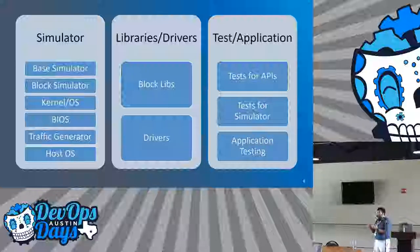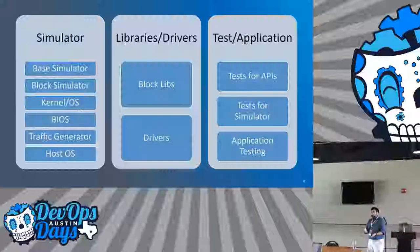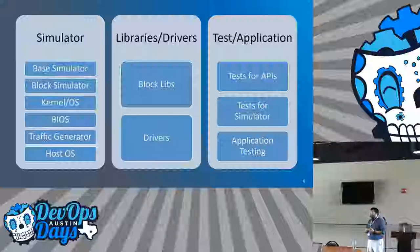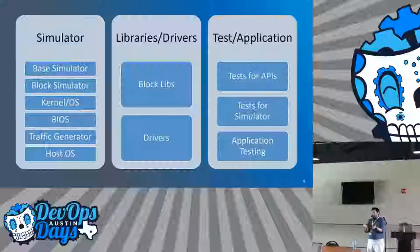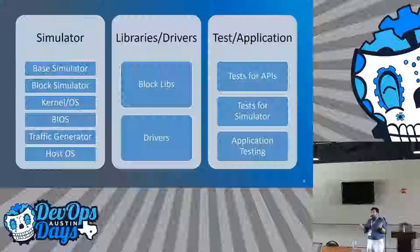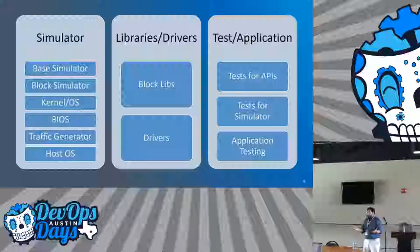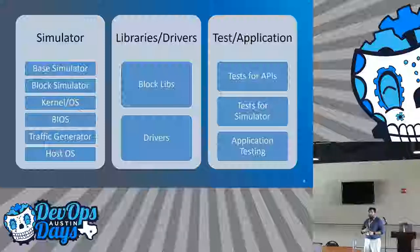Here's an example of the system we have, which most hardware teams developing anything would have: you have a simulator consisting of a base simulator, block simulators, the kernel or OS that goes on the simulator, the BIOS, the traffic generator or exercisers — basically some kind of external input to test the black box system. Because you're running a simulator, the host OS on which you're running it also comes into account.